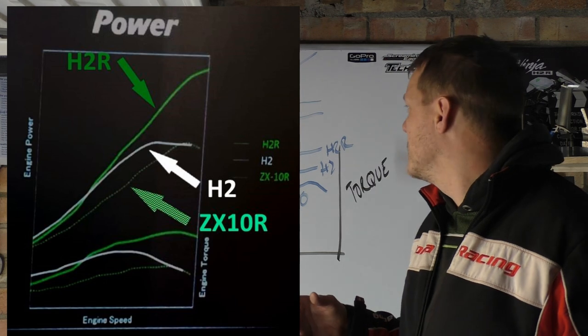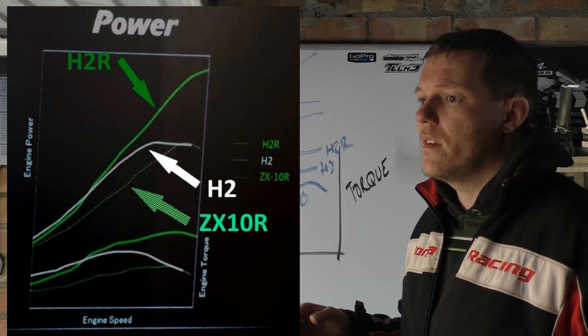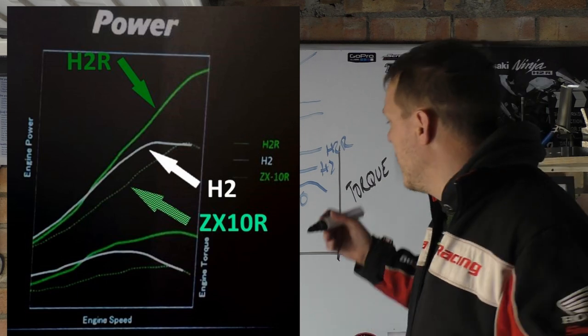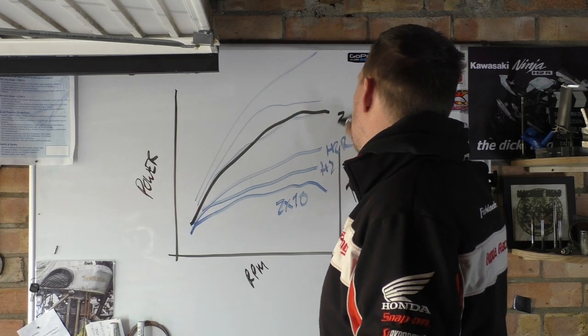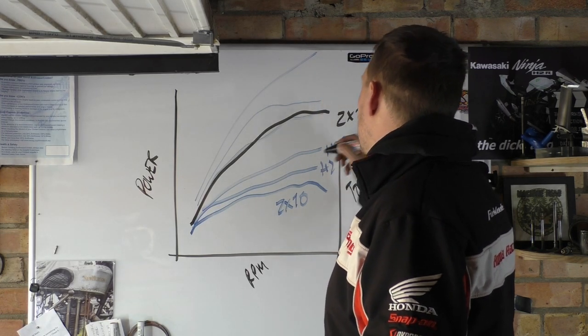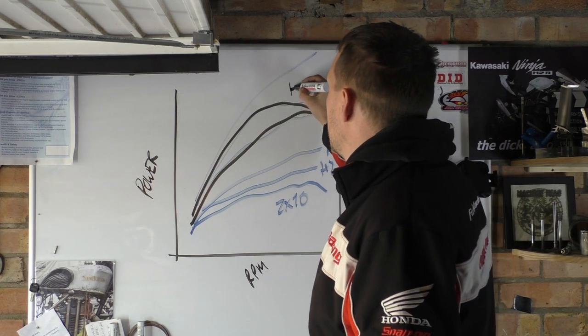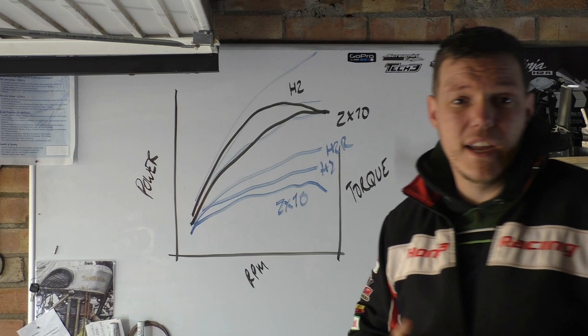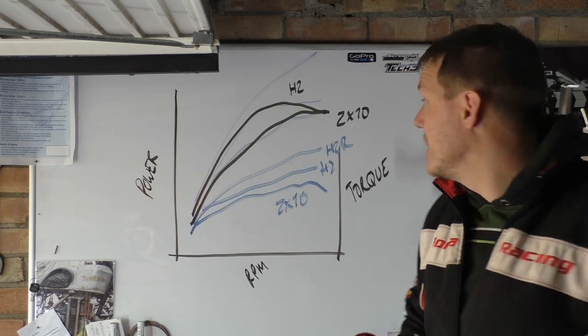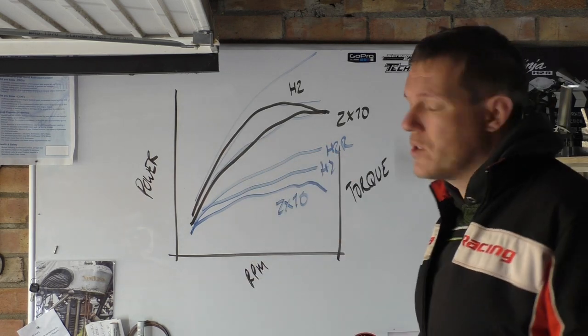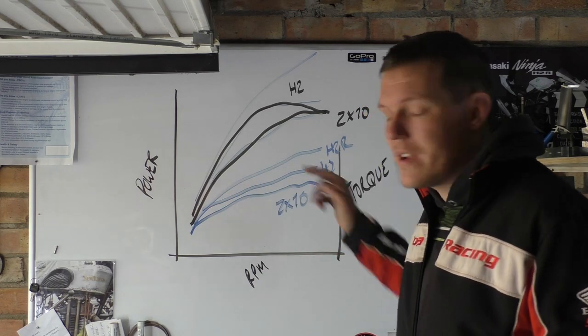All these three bikes are made by Kawasaki at the same time. The engines are very similar - the core engine bore stroke and all four cylinders. You can see that the H2 and the H2R immediately make more power and horsepower than the ZX10.